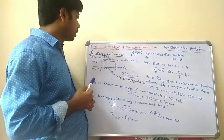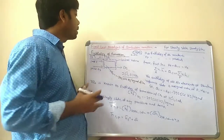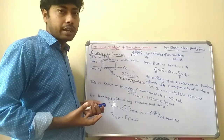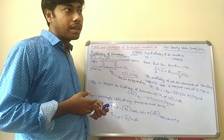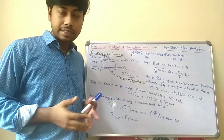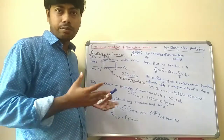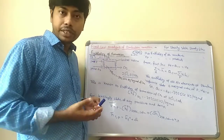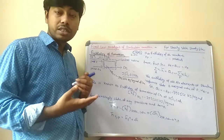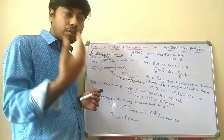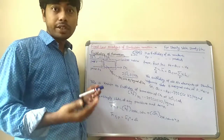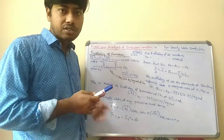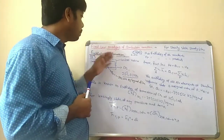Welcome back. Today we will discuss the fuel and combustion chapter, specifically the first analysis of combustion reactions. In the previous lecture, we discussed types of fuel — solid fuel, liquid fuel, gaseous fuel — and what is theoretical air, what is excess air, the stoichiometric ratio, and equivalence ratio. If the equivalence ratio is less than one or greater than one, we call it a lean mixture or rich mixture.